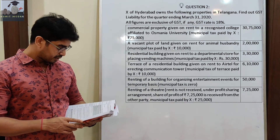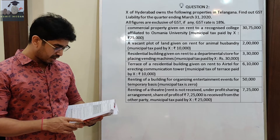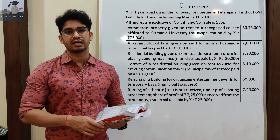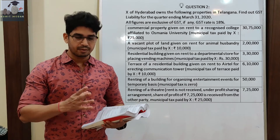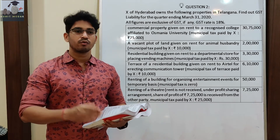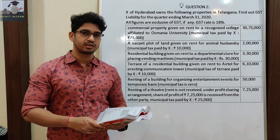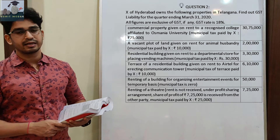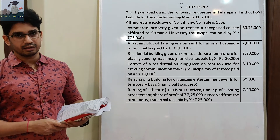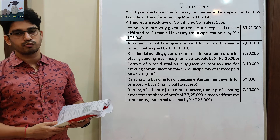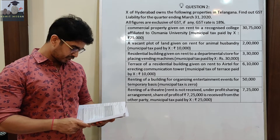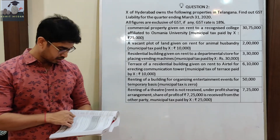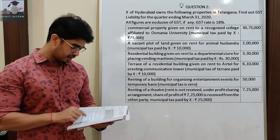Renting of theater — rent is not received under profit sharing arrangement. ये एक theater चलाते हैं, cinema hall उनका अपना है, वो उसको rent पे चढ़ा दिये। उन्होंने rent नहीं collect किया, profit share collect किया। जितना भी profit हुआ उसका profit sharing collect कर रहा है — total profit sharing यहाँ पे 7,25,000 रुपया है। Cinema theater का municipal tax उन्होंने payment किया यहाँ पे 25,000 रुपया।